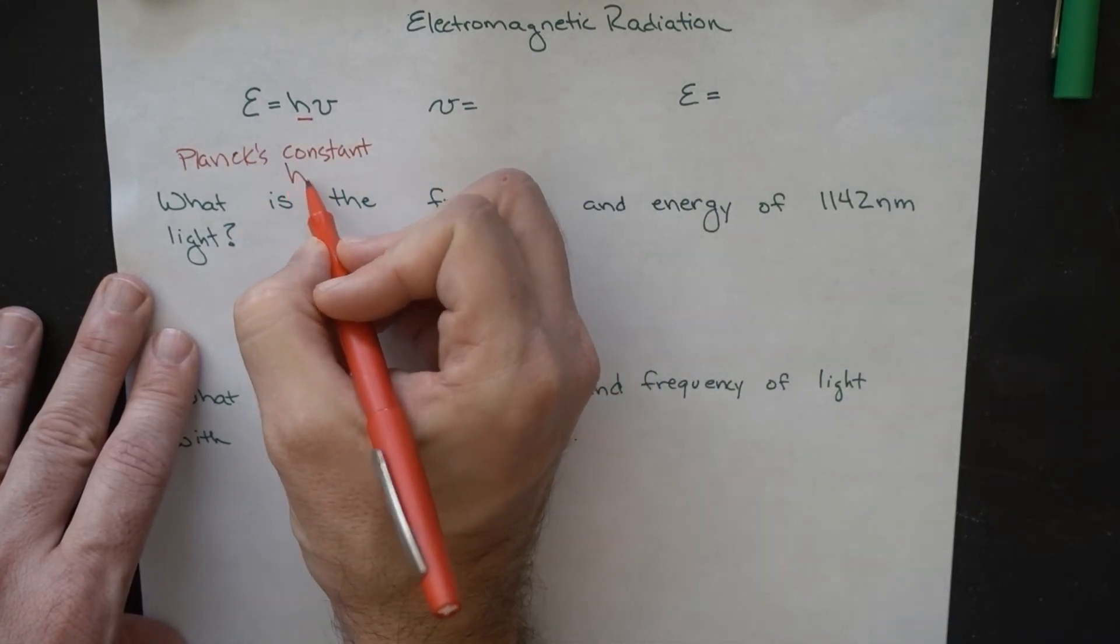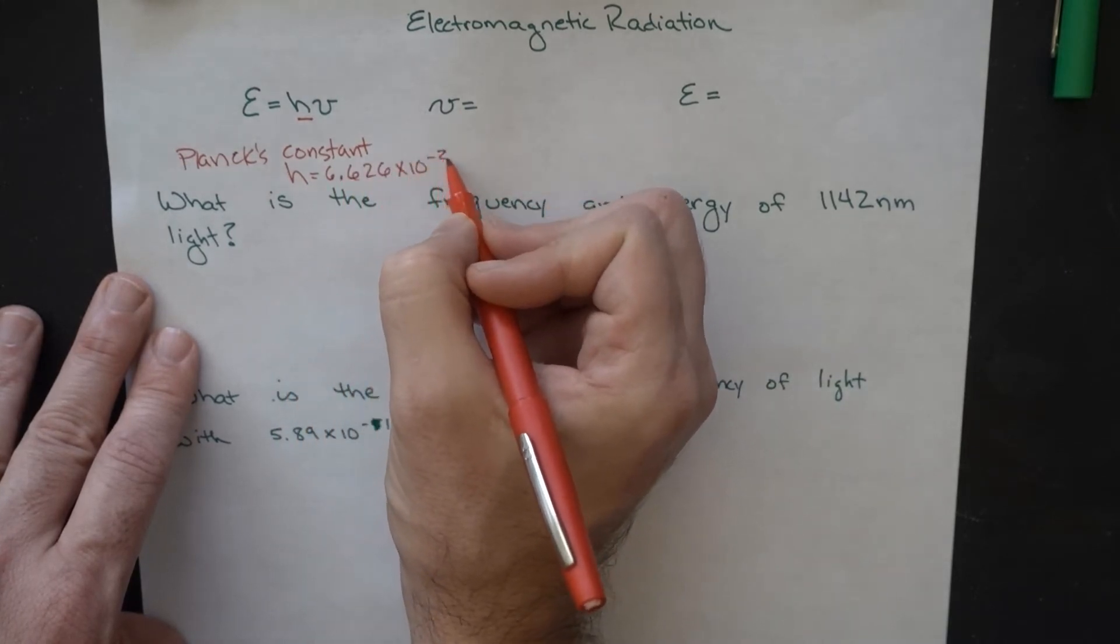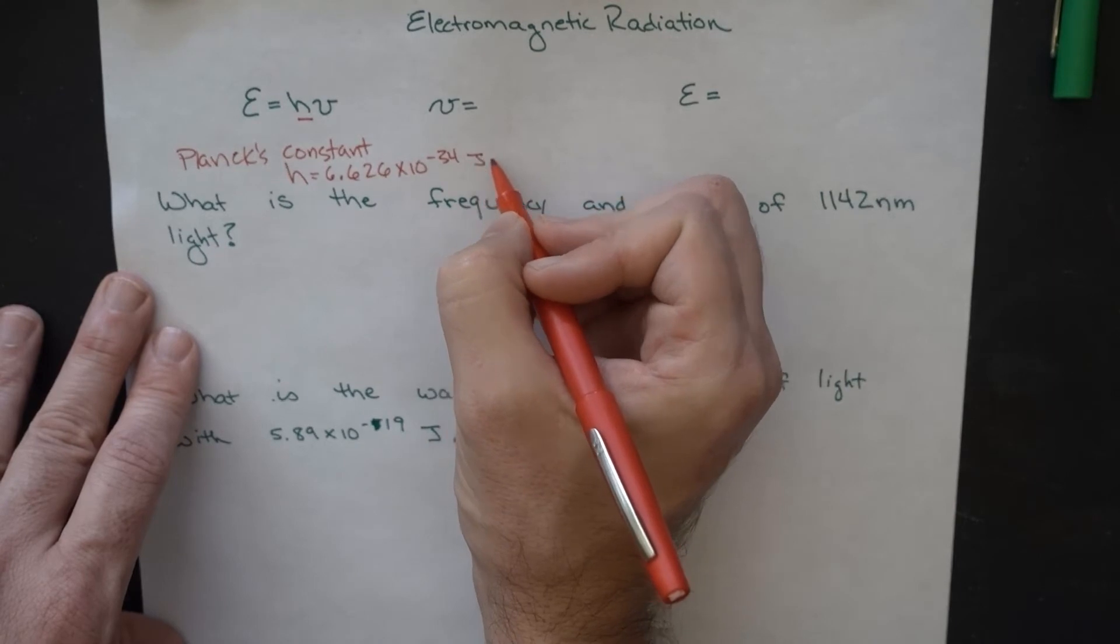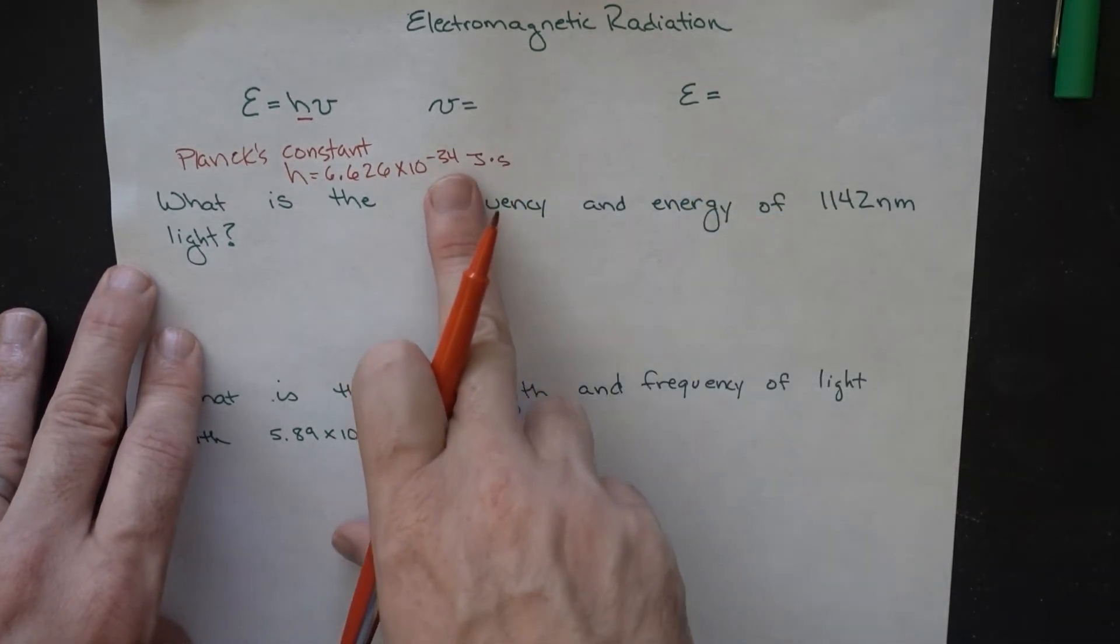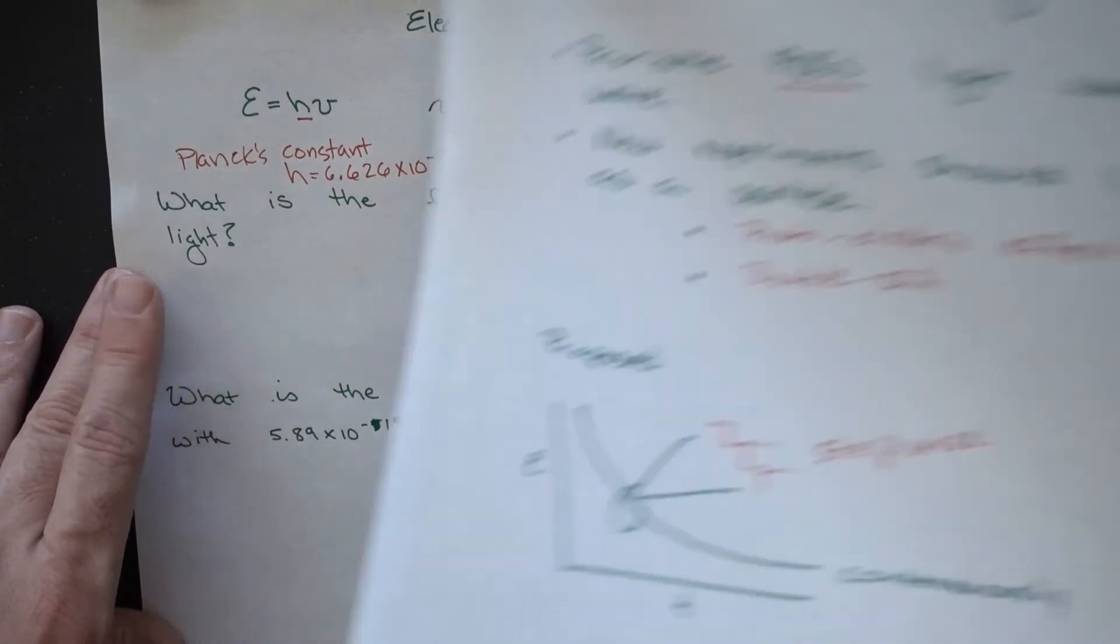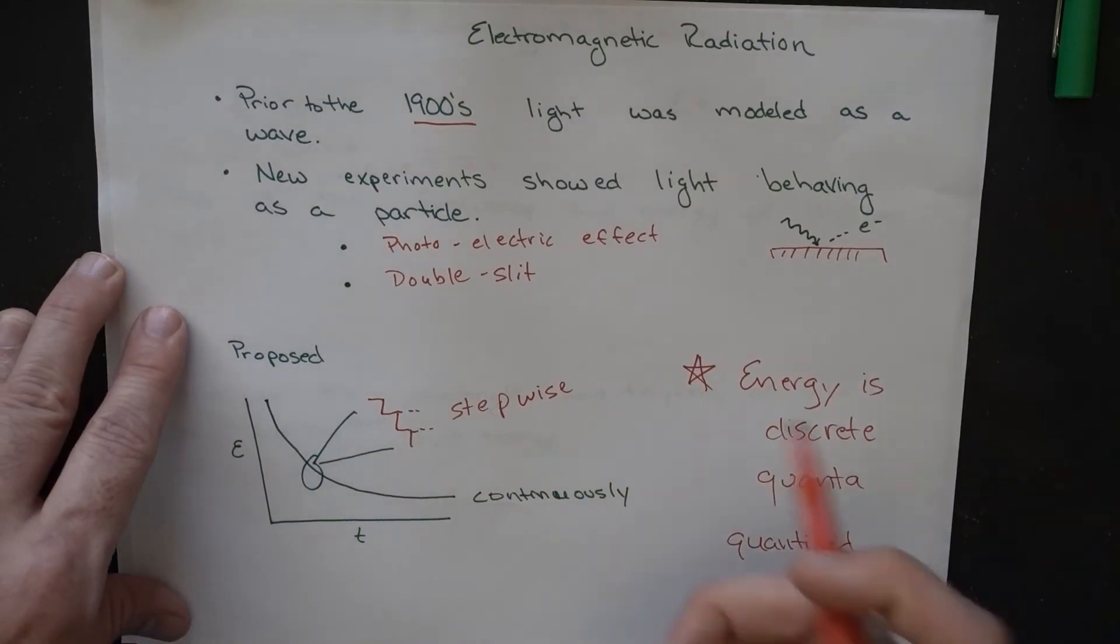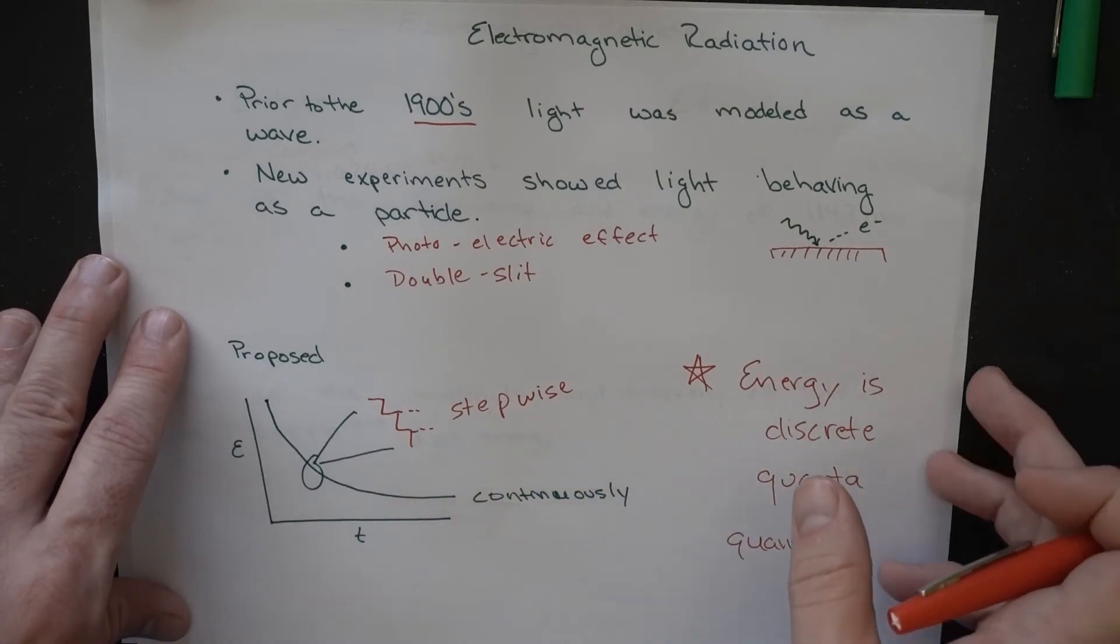Planck's constant, H, has a value of 6.626 times 10 to the minus 34 joules times seconds. An incredibly small number. Vanishingly small. 10 to the minus 34. The steps that we were seeing here in this stepwise release of energy were incredibly small steps. So, no wonder people thought that energy was being lost continuously, because the steps were kind of too small to really observe.